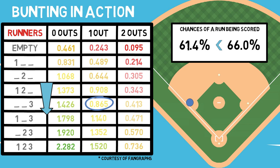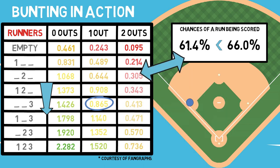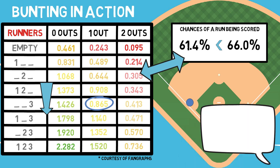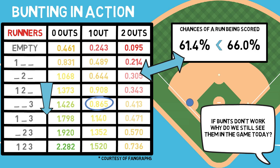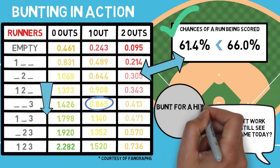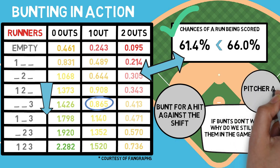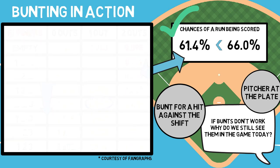And that is what this chart is so useful for. When paired with the probability of scoring a run, we can now make the best possible informed decisions on the actions that should be taken on the field — and that is the answer to our question posed at the beginning of the video. All of these charts can be found in the articles linked in the description below. If bunts don't work in terms of run expectancy, why do we still see them in the game today? Because they do work in very specific situations — including bunting for a hit against the shift, or when a pitcher is in the box and a bunt may be more beneficial than him attempting to put the bat on the ball.